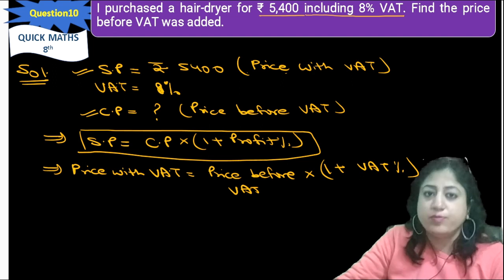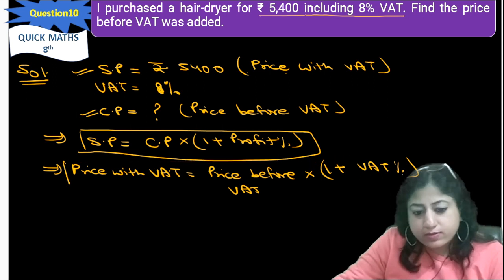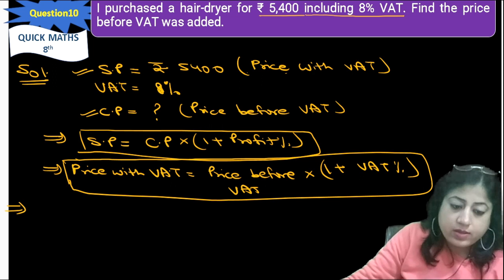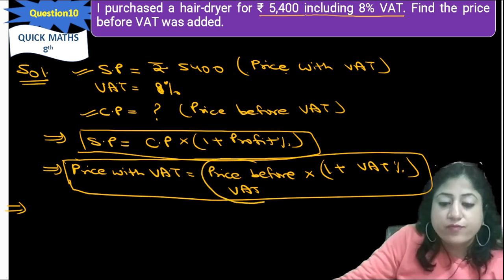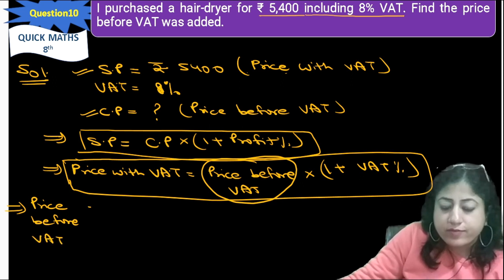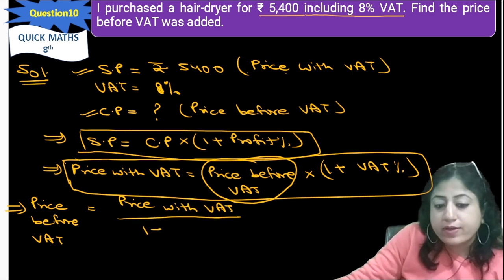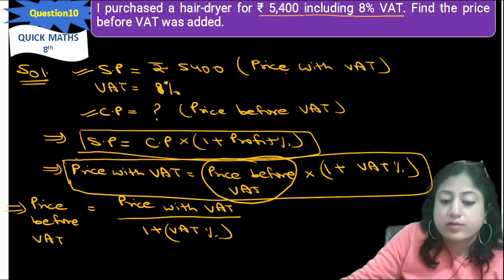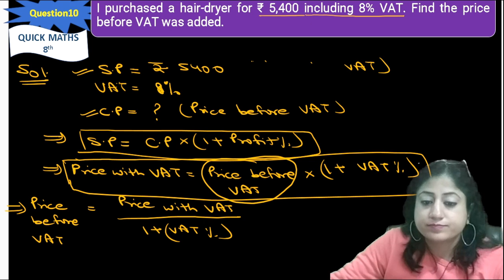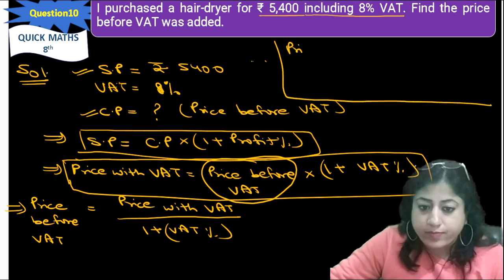We write price with VAT and price before VAT. Using this formula, we have to determine the price before VAT. So, price before VAT equals price with VAT divided by (1 plus VAT percent). That's it.